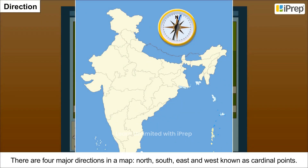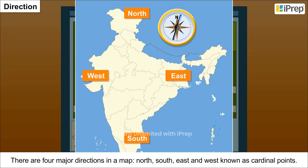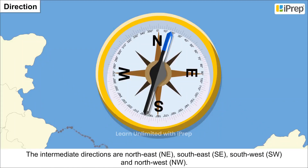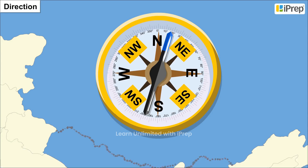There are four major directions in a map — north, south, east and west — known as cardinal points. The intermediate directions are north-east, south-east, south-west and north-west. We can use a compass to find out the direction of a specific place. Its magnetic needle always points towards the north-south direction.